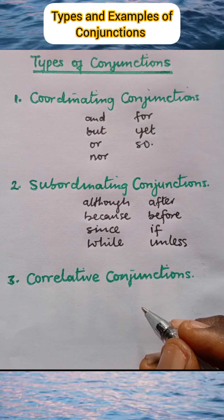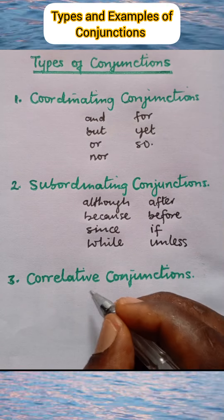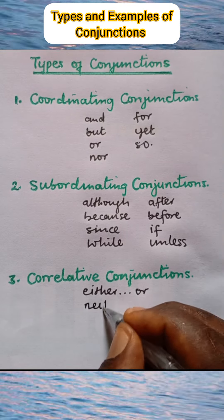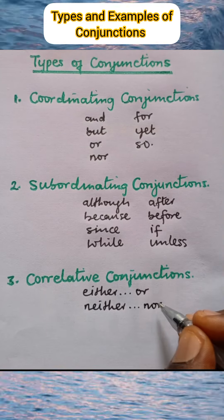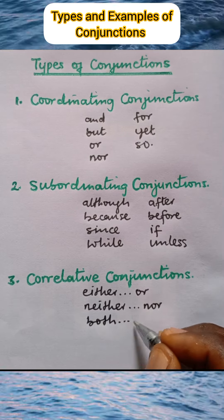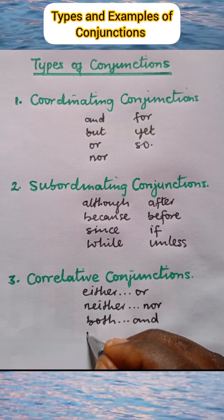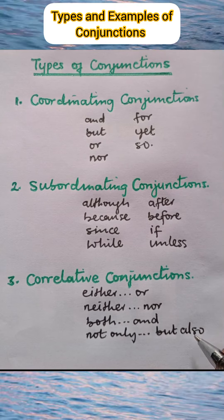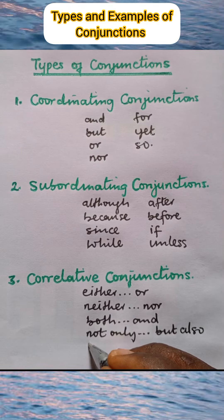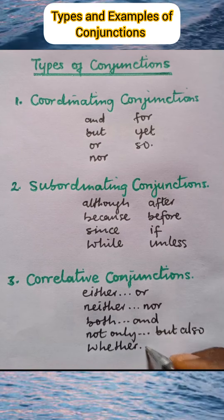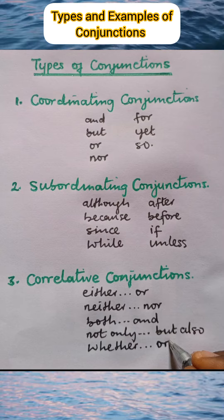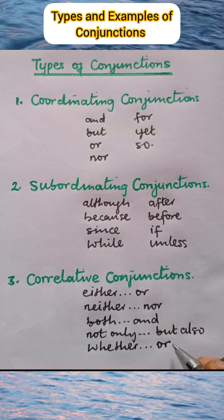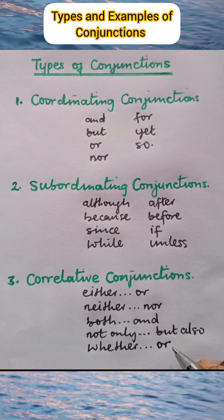Next, we look at examples of correlative conjunctions. We have: either/or, neither/nor, both/and, not only/but also, and lastly, whether/or. These are used to join two words, two phrases, or two clauses of equal grammatical elements.